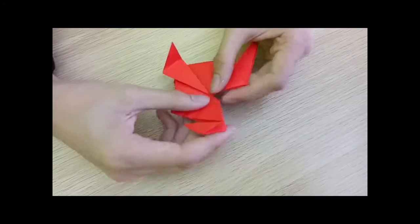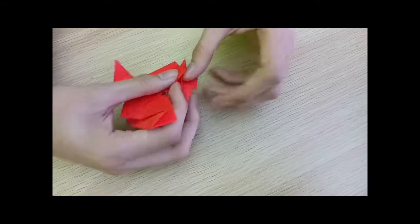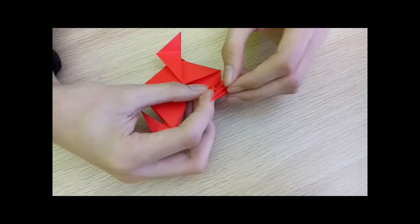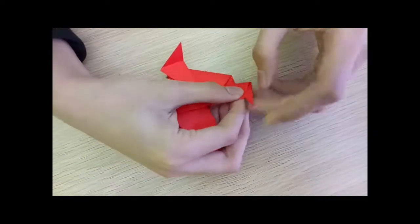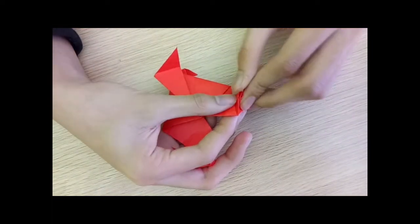So this part should be the tail and then this part should be the head. Fold it backwards and then fold it forwards, which should be the beak.